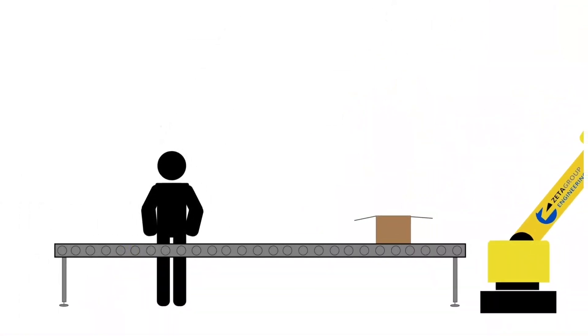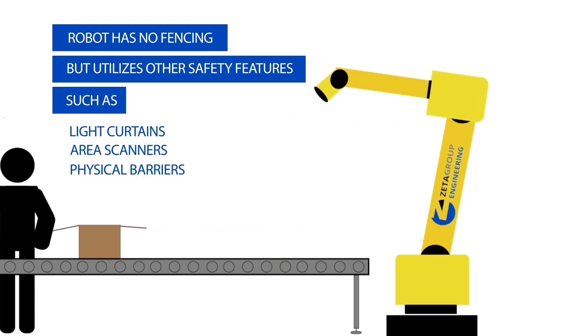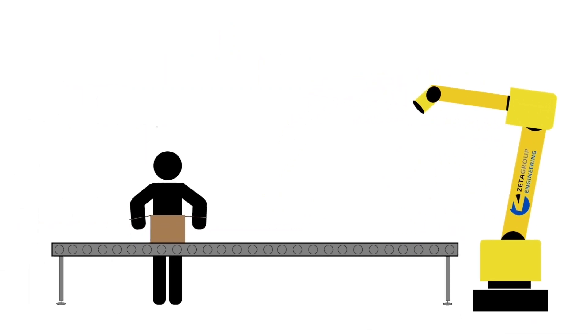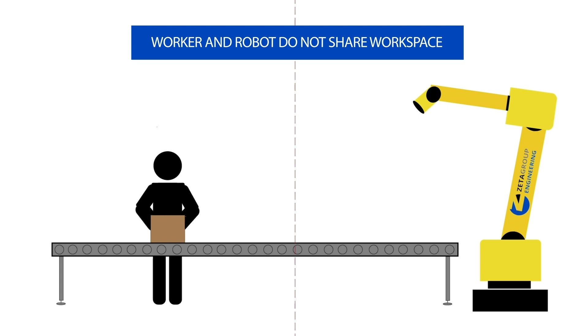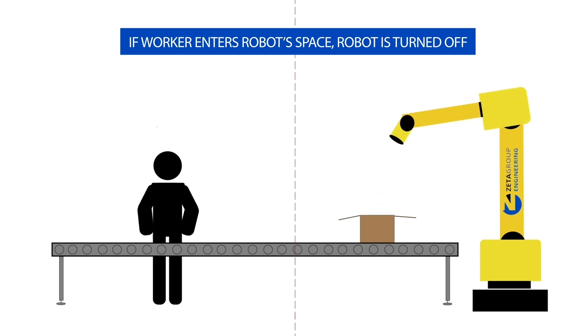Coexistence. This level has no fencing but the robot has other safety features such as light curtains, area scanners, or physical barriers. The worker and robot do not share a workspace and if the worker enters the robot space, the robot immediately stops.